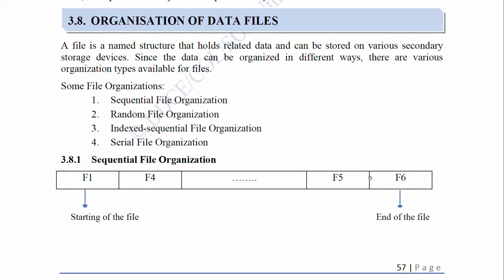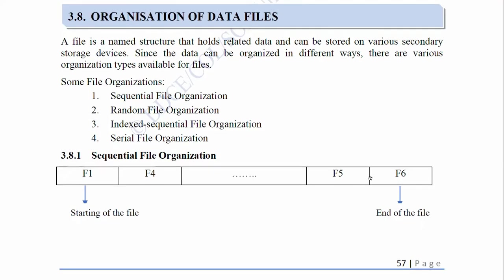3.8 Organization of Data Files. A file is a named structure that holds related data and can be stored on various secondary storage devices. Since data can be organized in different ways, there are various organization types available for files. Some file organizations are: sequential file organization, random file organization, indexed sequential file organization, and serial file organization.